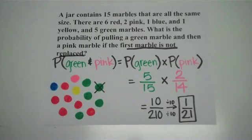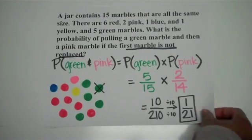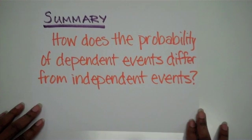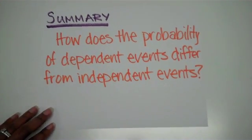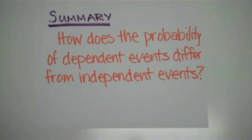Alright guys, that's all we've got. Make sure that if you need to, go back and rewind — take this at your own pace so that you can come to class ready to work on compound events tomorrow. Also, don't forget your summary, which should be at least 2 complete sentences answering the question: how does the probability of dependent events differ from independent events?